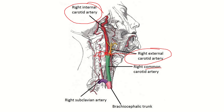We can see at this level there is a cervical vertebra, and we need to find out at which vertebral level this bifurcation occurs. The brachiocephalic trunk arises from the arch of the aorta and divides into the subclavian artery and common carotid artery. The common carotid ascends and at this level divides into the external carotid and internal carotid artery.